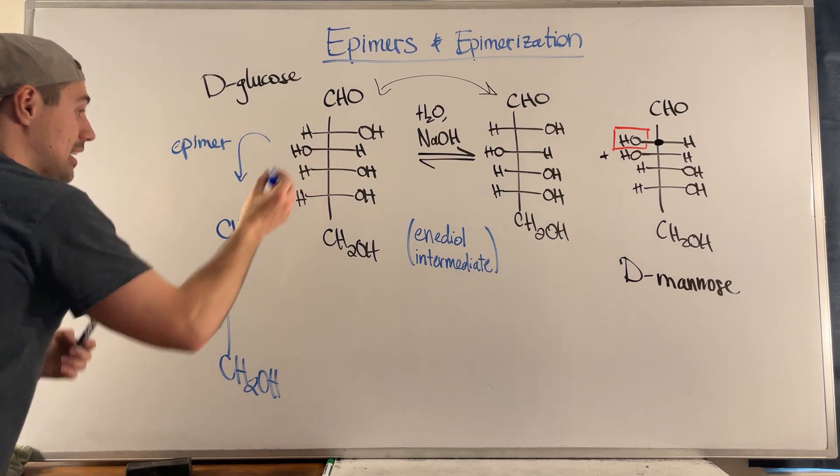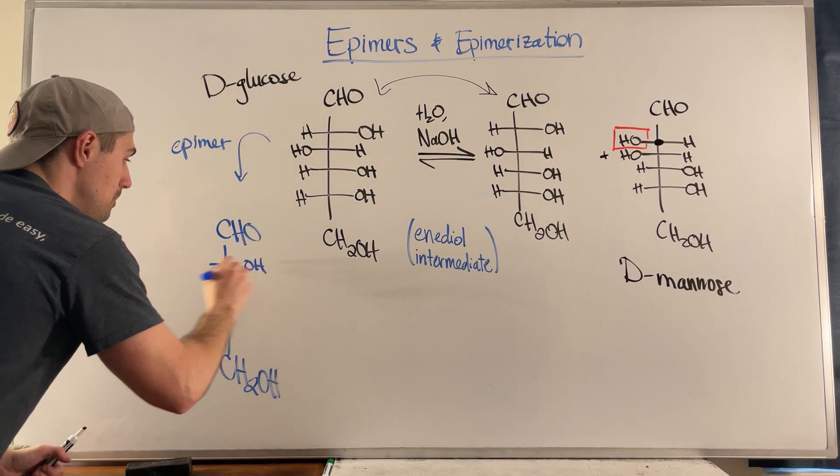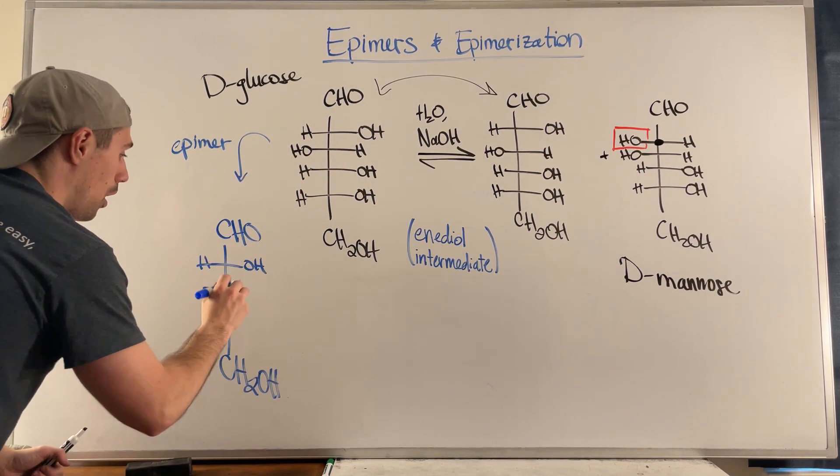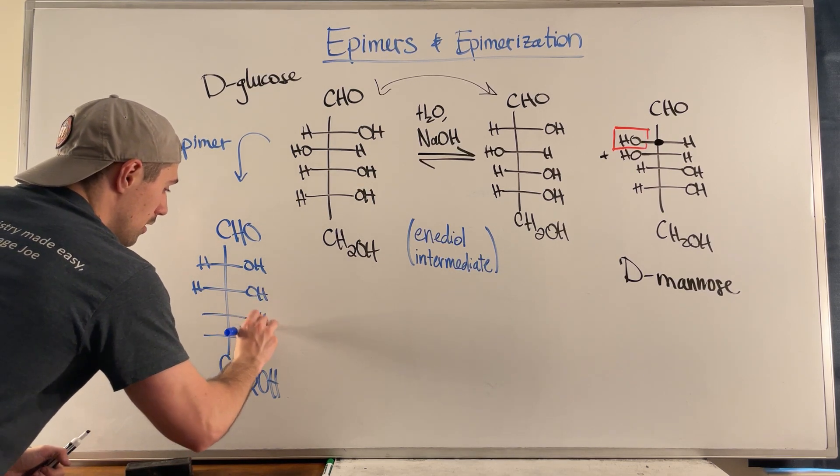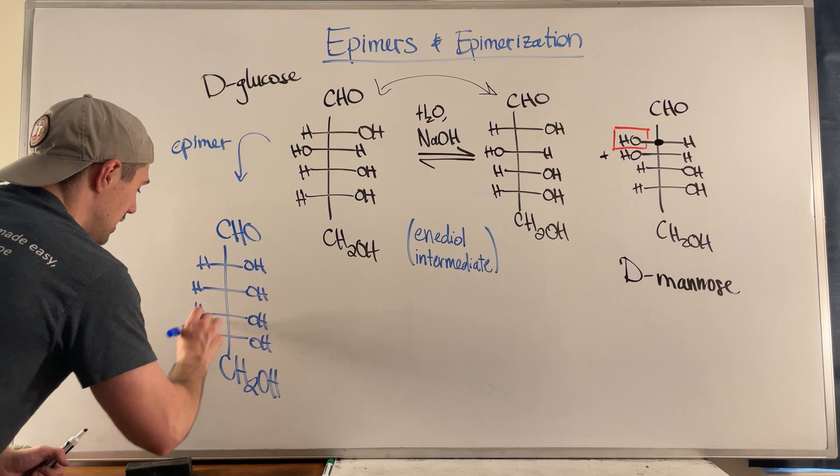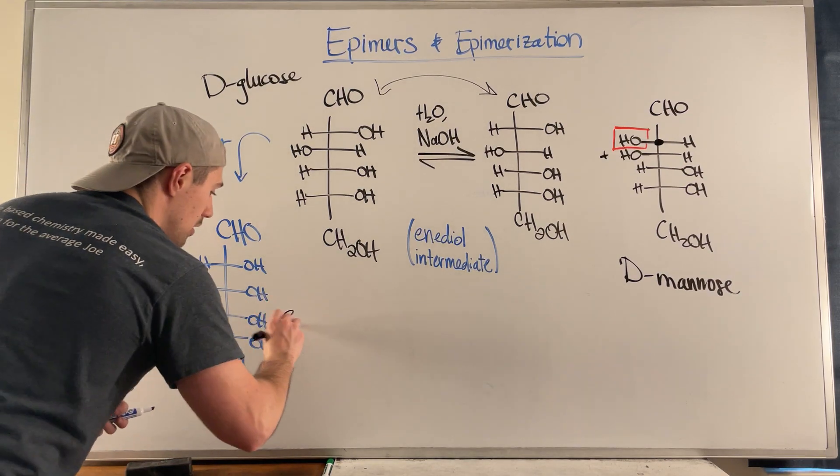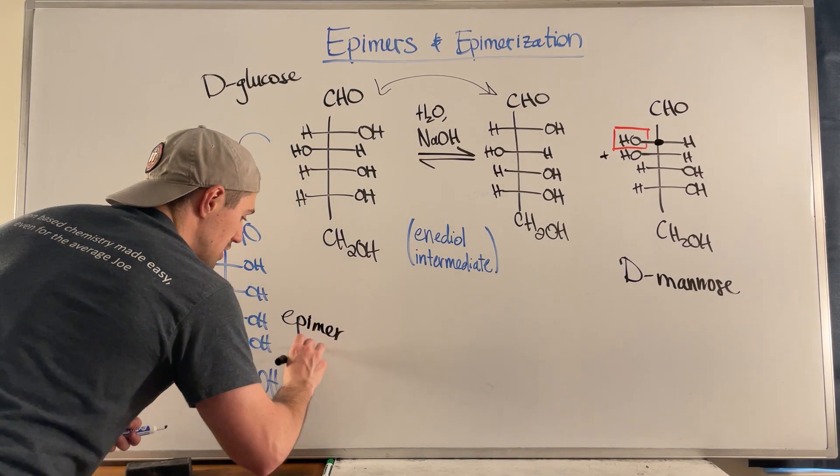So I'd keep the first one the same. That's, we only change one. I could flip the second one. And this could be, this is an epimer of D-glucose.